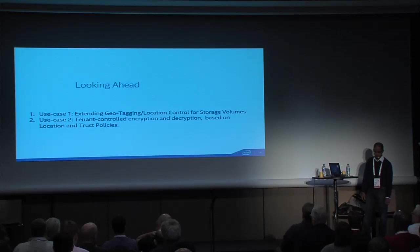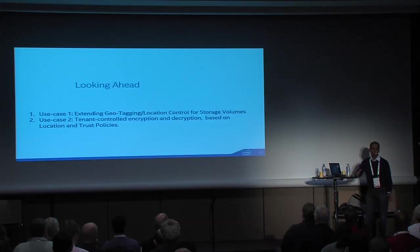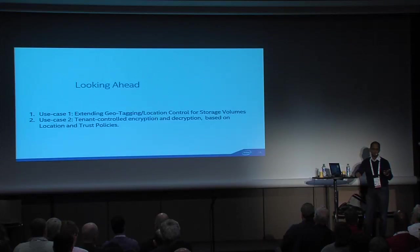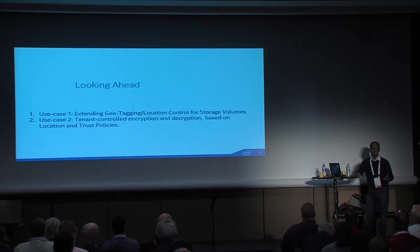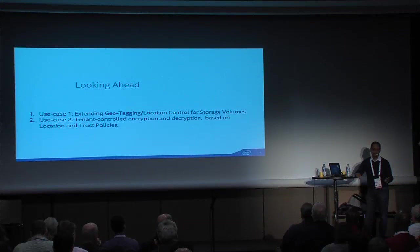The second use case: when you put your VMs and data at a service provider, you want some kind of protection. The typical model is encryption — but who controls the keys? Currently you either have no encryption or encryption controlled by the service provider. We heard from customers that they want control of the keys, so we are exploring what we call tenant-controlled VM encryption and decryption, where decryption keys are provided to the service provider only when the service provider can assert sufficient trustability of the infrastructure.